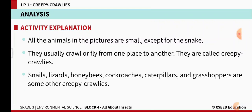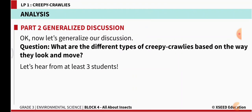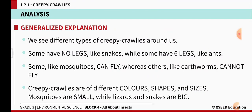Snails, lizards, honey bees, cockroaches, caterpillars, and grasshoppers are some other creepy crawlies. So far we learnt about ant, spider, lizard, snake, and butterfly, but we also have these others. What are the different types of creepy crawlies based on the way they look and move? They look and move differently.